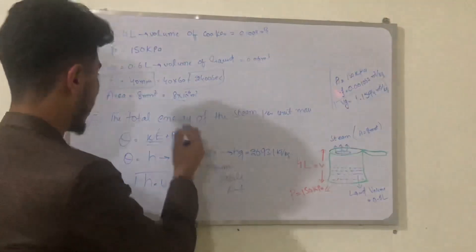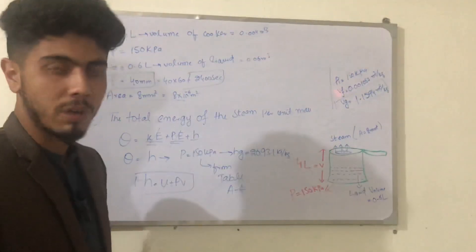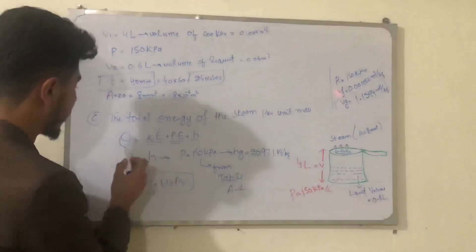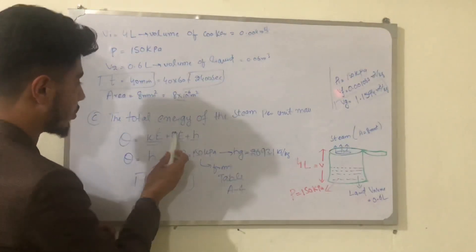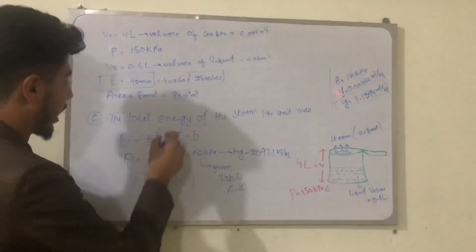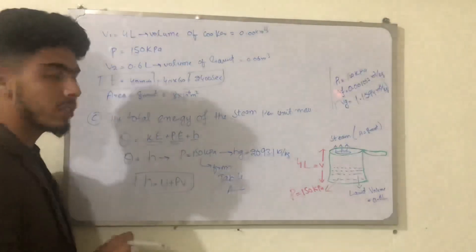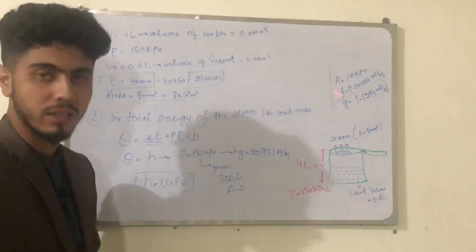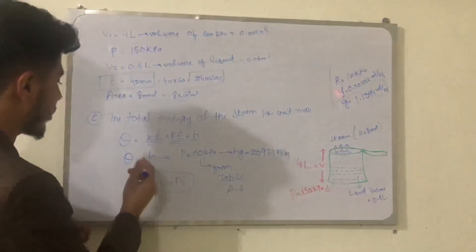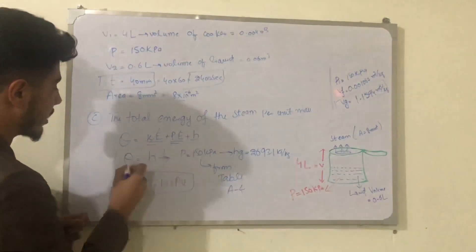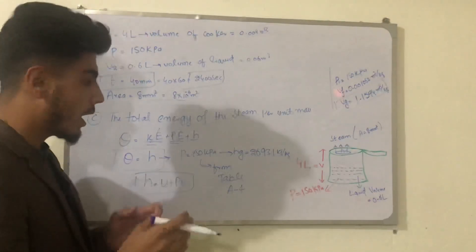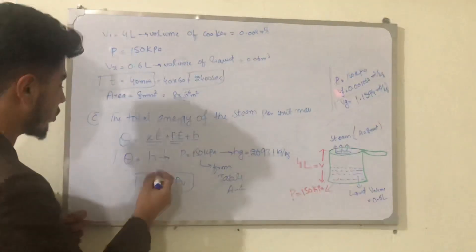The third step is to find the total energy of the steam per unit mass. The formula is: total energy per unit mass equals kinetic energy plus potential energy plus enthalpy. However, kinetic energy and potential energy are both negligible in this case, so the formula simplifies to theta equals enthalpy.